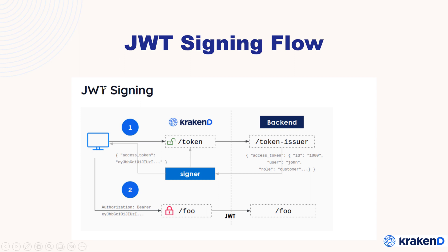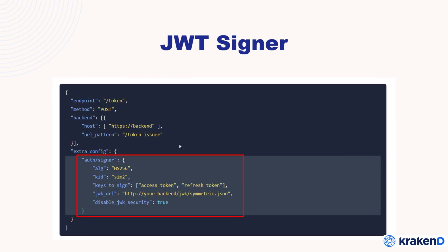The JWT signing flow starts from step one — it will check that the token needs authentication. The signer will check and it requires an access token, and it will point to the backend for verification. On the second flow, there is an Authorization Bearer header; it also needs a token because it's a protected route, and it will validate — if it passes, the request goes through.